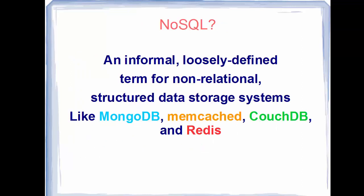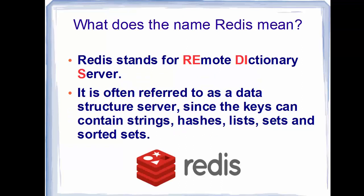NoSQL is an informal, loosely defined term for non-relational structured data storage systems like MongoDB, Memcached, CouchDB, or Cassandra. Following in the footsteps of other NoSQL databases, Redis allows the user to store vast amounts of data without the limits of relational databases. In NoSQL databases, data can be stored in a non-relational way.